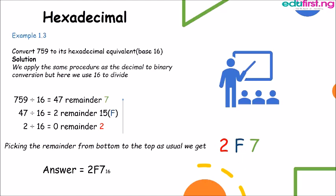Now 759 divided by 16 we get 47. The remainder is 7. 47 divided by 16 we get 2. The remainder is 15. And we know that 15 hexadecimal is represented by F.